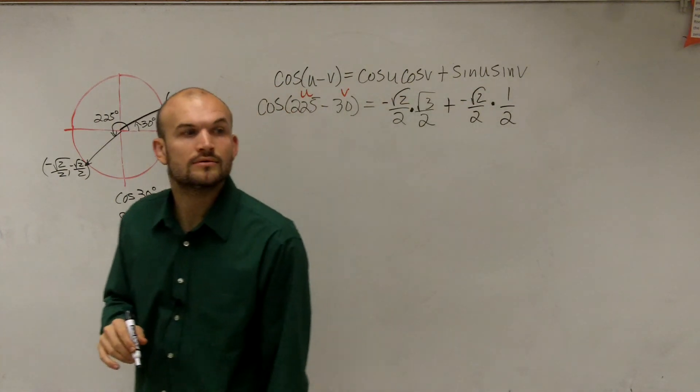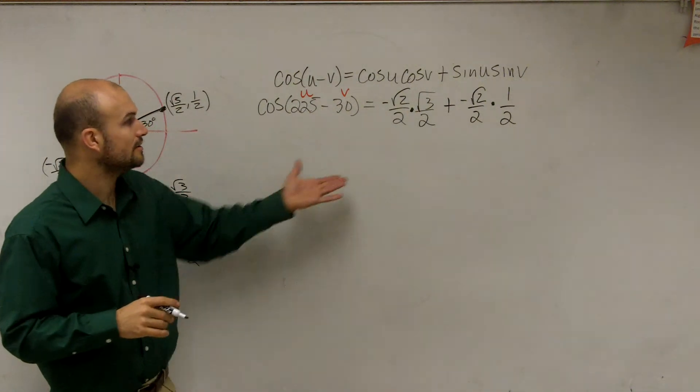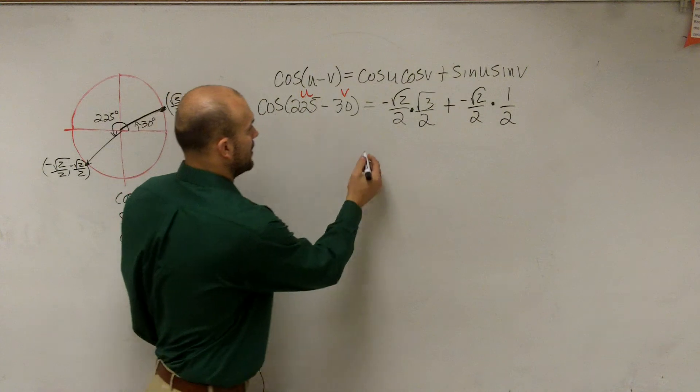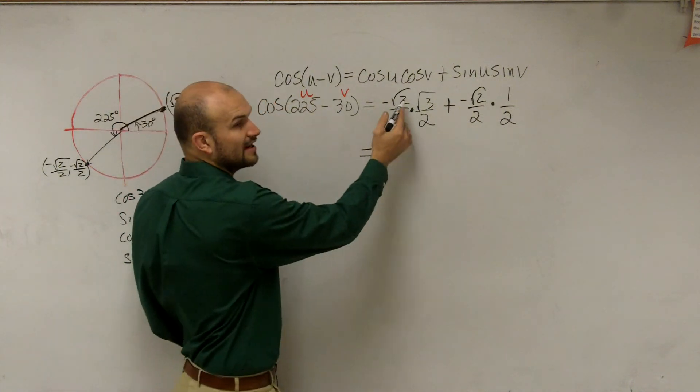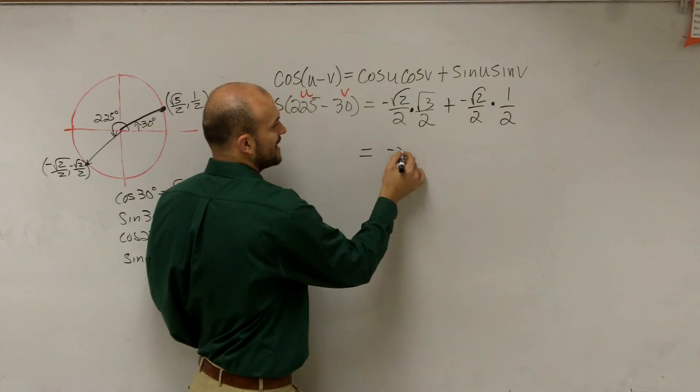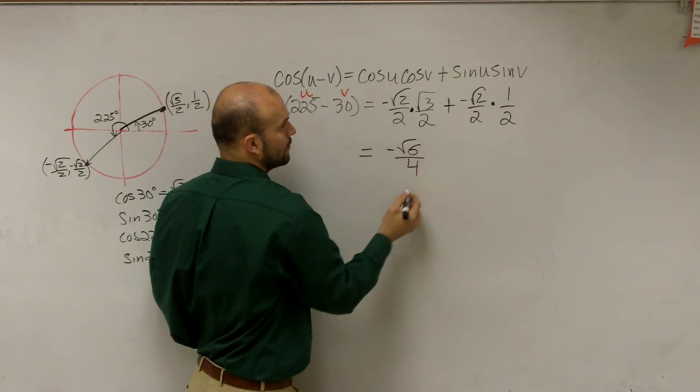OK? All I did was I found my angles for each angle, and then I'm just plugging them in. Now I'm going to multiply. So negative square root of 2 times square root of 3 is going to be a negative square root of 6 over 4.